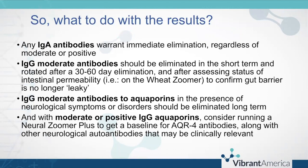What do you do with the results on a lectin zoomer? Any IgA antibodies warrant immediate elimination regardless of whether they're moderate or positive — this is a shorter-term antibody with a half-life of six to ten days, significantly shorter than IgG. IgG moderate antibodies should be eliminated short-term, rotated after a 30 to 60 day elimination, and after assessing the status of intestinal permeability. If you run a wheat zoomer alongside your lectin zoomer, you have a baseline for intestinal permeability, and you would want to rerun at least the intestinal permeability panel before reintroducing any reactive foods.